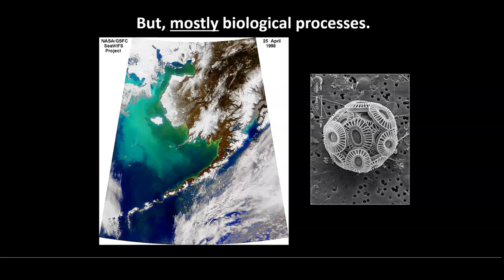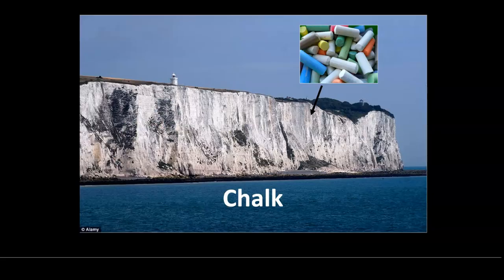You can also precipitate carbonates from biological processes, and this is the most important way we make carbonates. Organisms in many different groups produce carbonate skeletons by using their own energy to pull carbonate out of solution. Coccolithophores are tiny microscopic organisms — a satellite shot of Alaska shows trillions of them in a massive plankton bloom, clouding the water visibly from space. Huge accumulations of these make an incredibly fine-grained carbonate rock called chalk — like the White Cliffs of Dover.